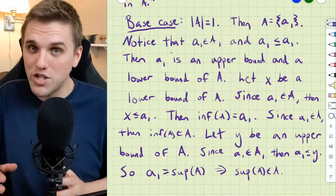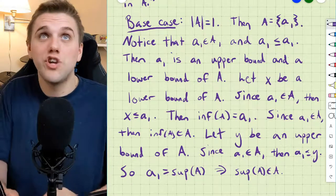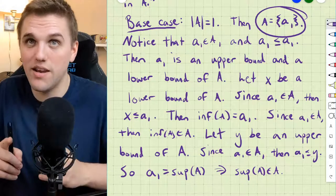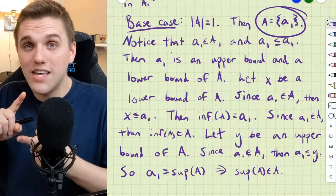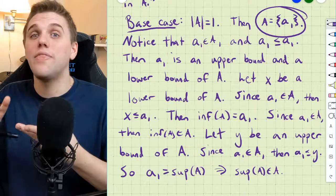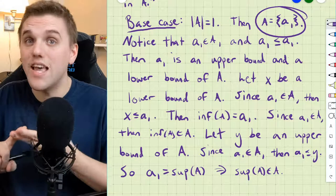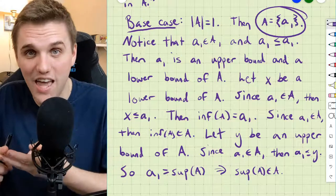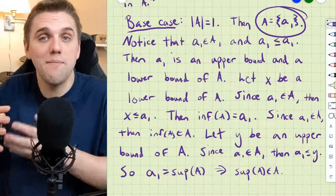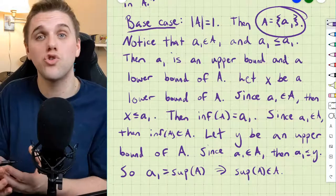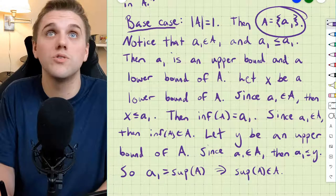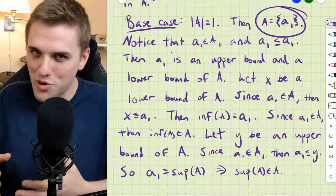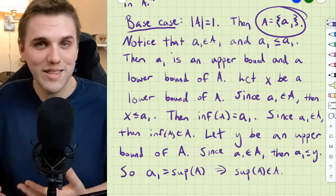Let's summarize what we've shown. If we have a set with just one element — the base case — then A is bounded, the infimum of A exists and is in A, and the supremum of A exists and is in A. That means P(N) is true for N equals 1. But that's not the end of the proof — we still have to use mathematical induction, so let's do the inductive step.